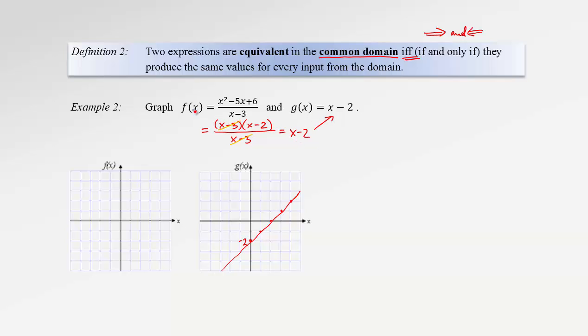However, there is one point that these two functions will not agree on. Which point is that? Well, it's the point 3 because f of 3 can't be evaluated. We can't divide by 0. However, g of 3 can be easily evaluated. It will be 3 minus 2 will be just 1. So we know that g of 3 is equal to 1. However, f of 3 doesn't exist. Other than that, for any other x value, these two functions agree. They have exactly the same output.